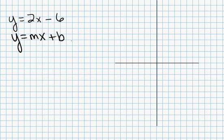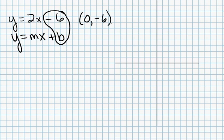The m and the b tell you where things are at in your graph. The b, in this case, is negative 6. That tells me that one of my points is going to be (0, negative 6). The y-intercept is always 0 for x, and y is whatever is taking the place of b in the equation. So the first point I'm going to graph is (0, negative 6).